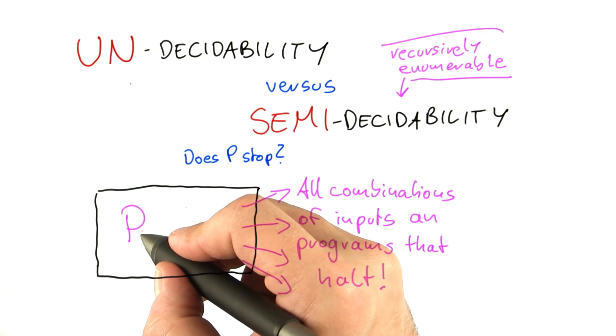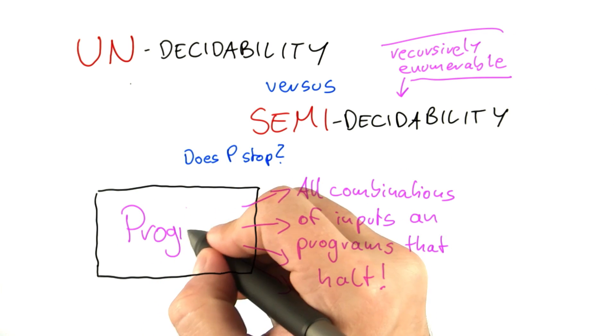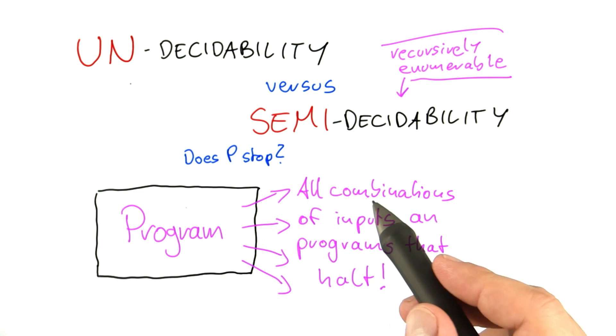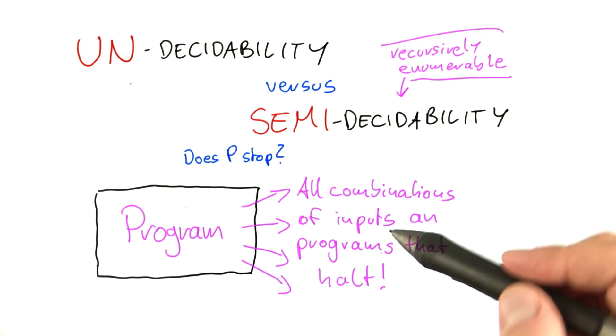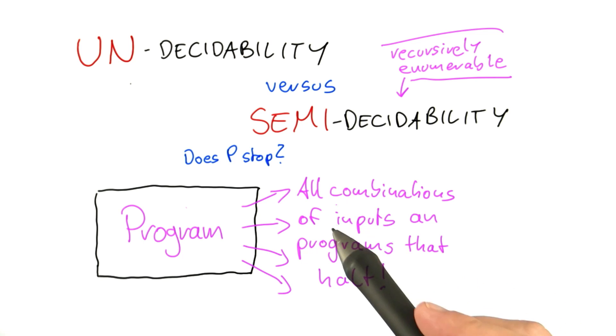Recursive enumerability means that you can write a program that outputs all combinations of inputs and programs, and I really seriously mean all combinations of inputs and programs that halt.